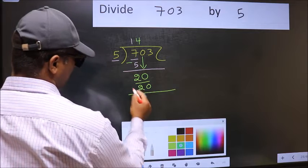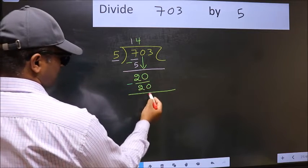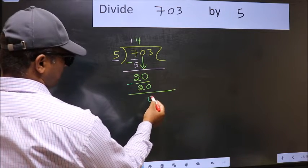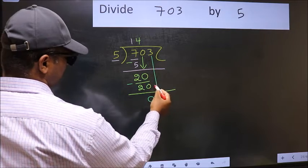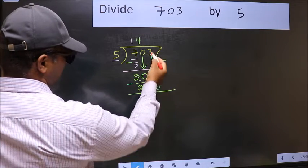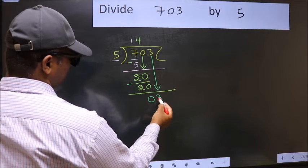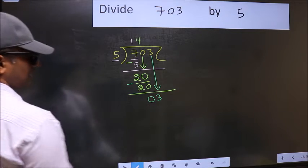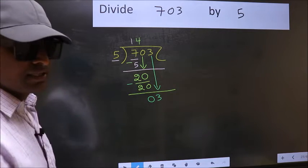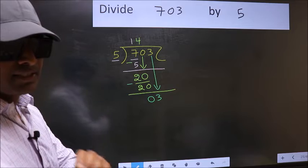Now you should subtract. 20 minus 20, 0. After this, bring down the beside number. So 3 down. After this step, the mistake happens. And the mistake is this.